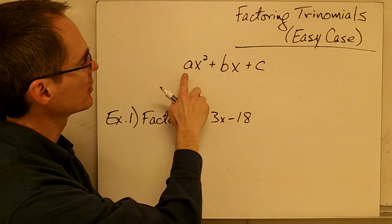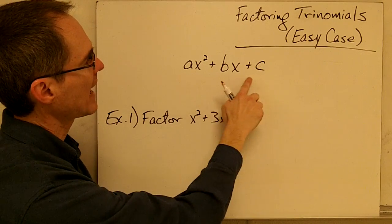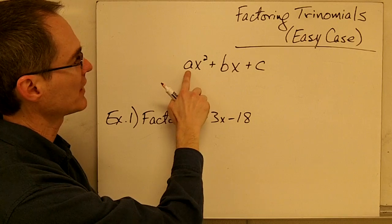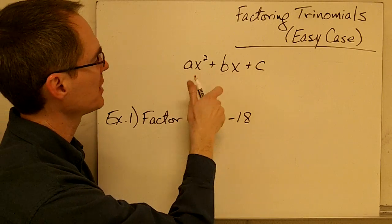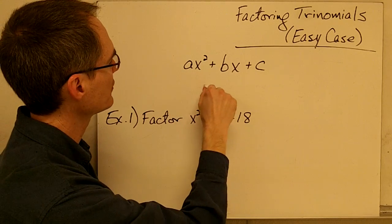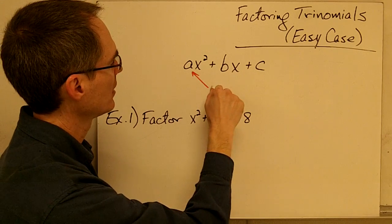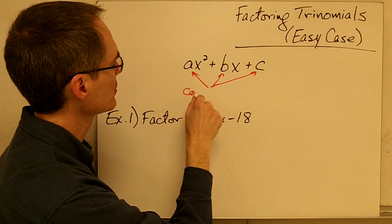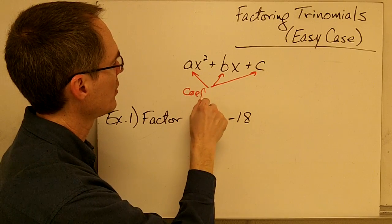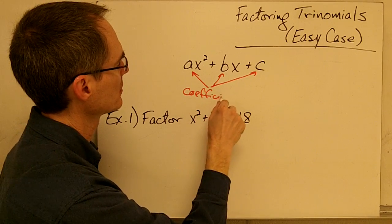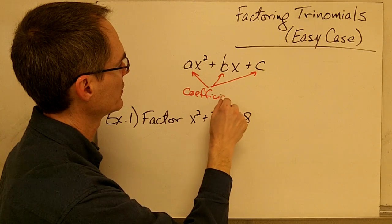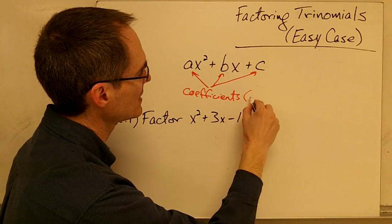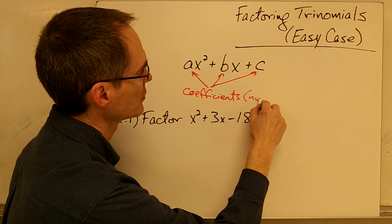In particular we're going to be looking at algebraic expressions that look like this: ax squared plus bx plus c. These values here — a, b, and c — are just what we call coefficients, and really that just means numbers.